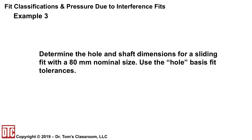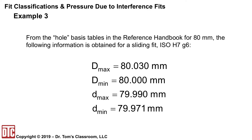Example 3: Determine the hole and shaft dimensions for a sliding fit with an 80-millimeter nominal size using the hole basis fit tolerances. Going to the hole basis tables for 80 millimeters, noting it is ISO H7G6, the maximum diameter of the hole is 80.030 mm and the minimum is 80.000 mm. The maximum diameter of the shaft is 79.990 mm, confirming a sliding fit, and the minimum is 79.971 mm.